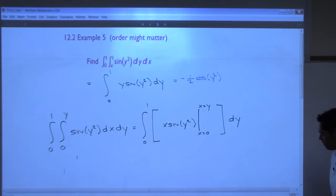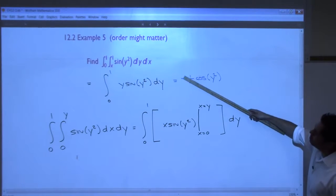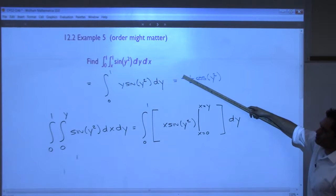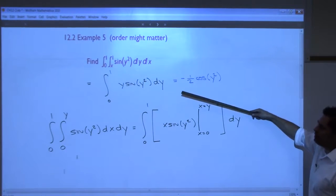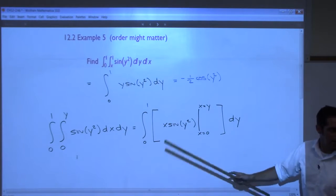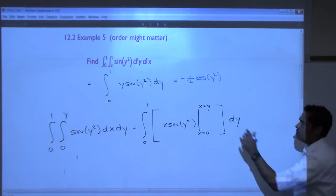Shall we check it real quick to make sure it is? What's the anti-derivative of cosine of something? Negative sine of that something, then times the derivative of what's inside, what's the derivative of what's inside? 2y. So what's 2y times negative 1 half? It should be y, and then there was a negative that popped with the sine, so it works, you can go do it on your own.